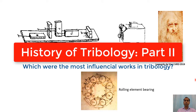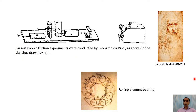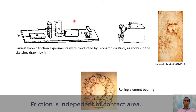In a previous video on the history of tribology, I discussed some ancient work on tribological issues. The last part covered Leonardo da Vinci's work, which was quite revolutionary because it established that the coefficient of friction is independent of contact area. Da Vinci carried out experiments using the same block in different orientations with different contact areas and found that the frictional force was nearly the same.